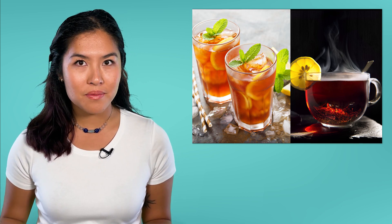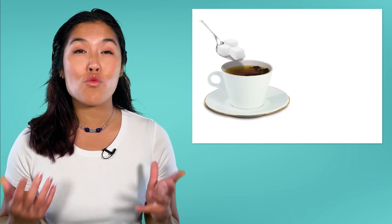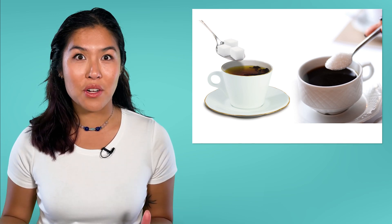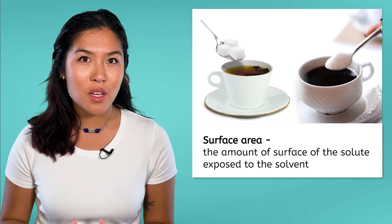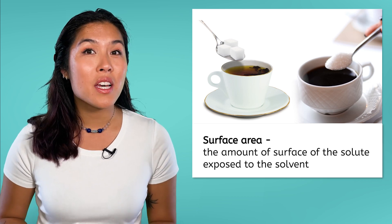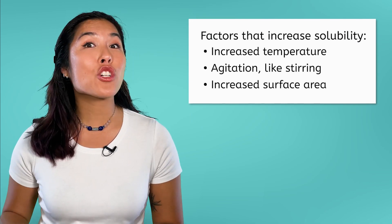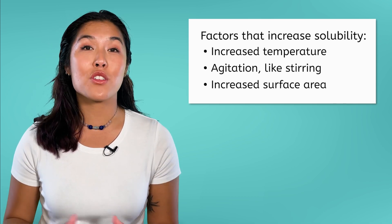What would happen if I added the same amount of sugar to a glass of hot tea as I do to the same amount of iced tea? Usually, the hot tea will be able to dissolve more sugar. What would happen if I stirred a supersaturated solution? If I stir it, I can get more sugar to dissolve, but I have to keep stirring, because if I stop, some of the sugar may settle to the bottom. What if I used a sugar cube instead of regular granulated sugar? The granulated sugar would dissolve faster than the sugar cube because it has more surface area — the amount of surface that is exposed, which is higher when you have a lot of smaller particles compared to one large particle. Increased temperature, agitation such as stirring, and increased surface area can all increase the solubility of a solute in a given amount of solvent.